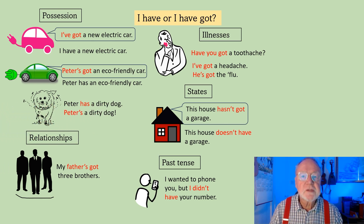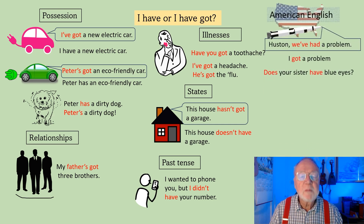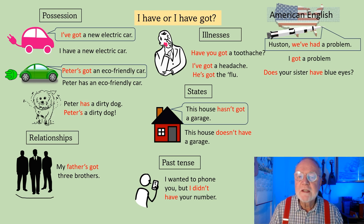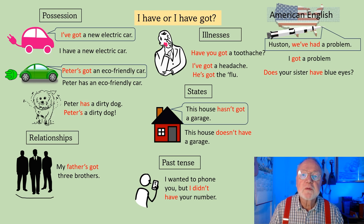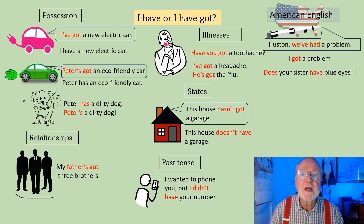American English is slightly different. Do you remember Apollo 13 and John Swigert? Houston, we've had a problem. He didn't use got there, did he? He didn't say we've got a problem. He put it in the past tense and said we've had a problem. Very often Americans will drop the have entirely — I got a problem. Listen to American films and American speech and you'll hear that very clearly.